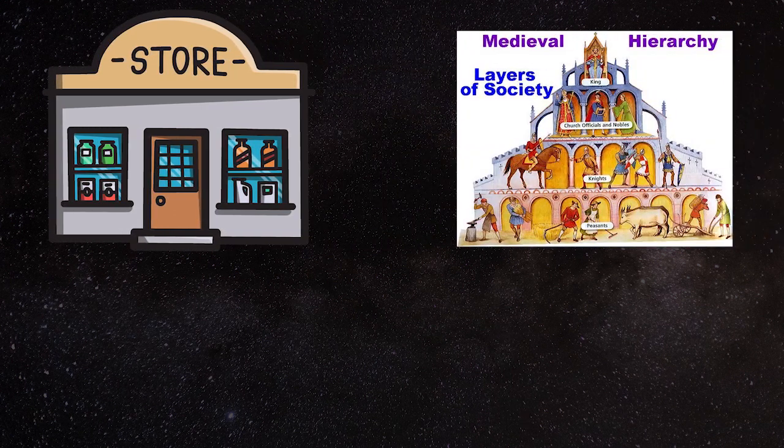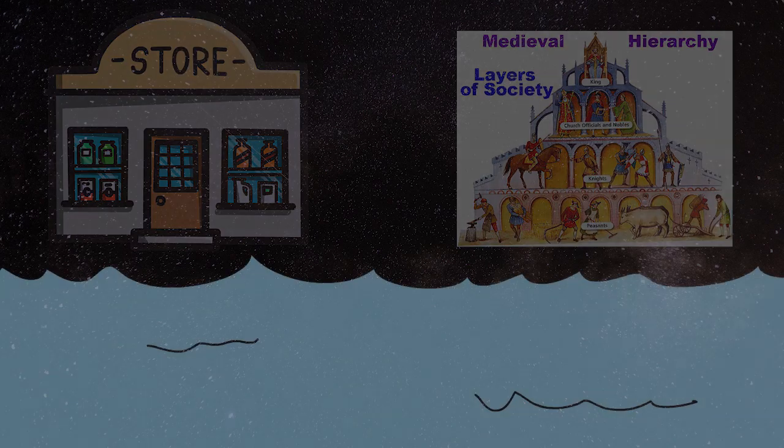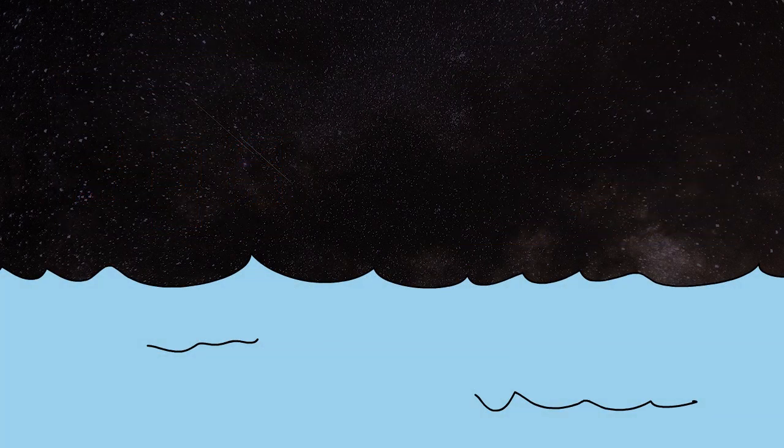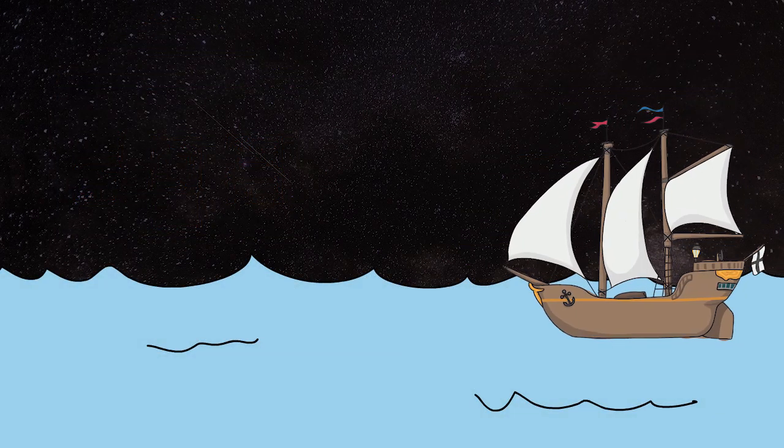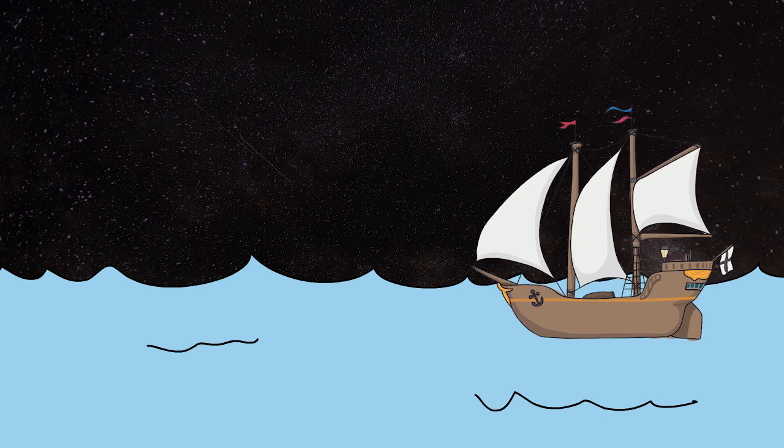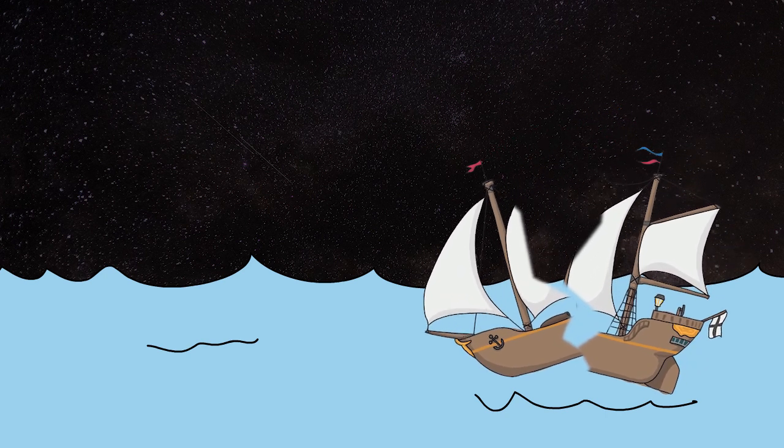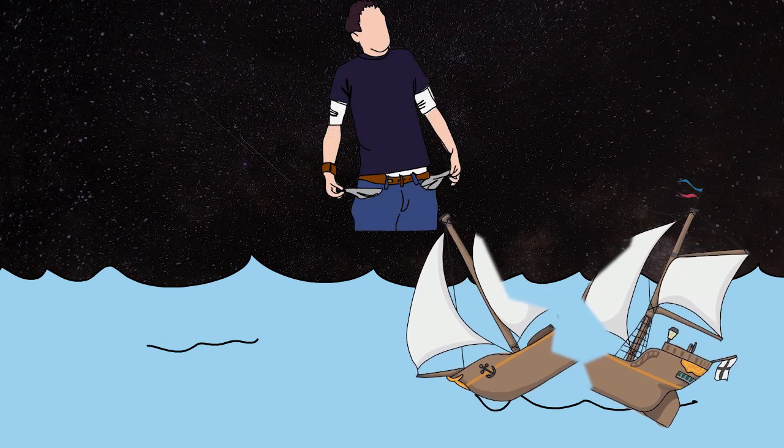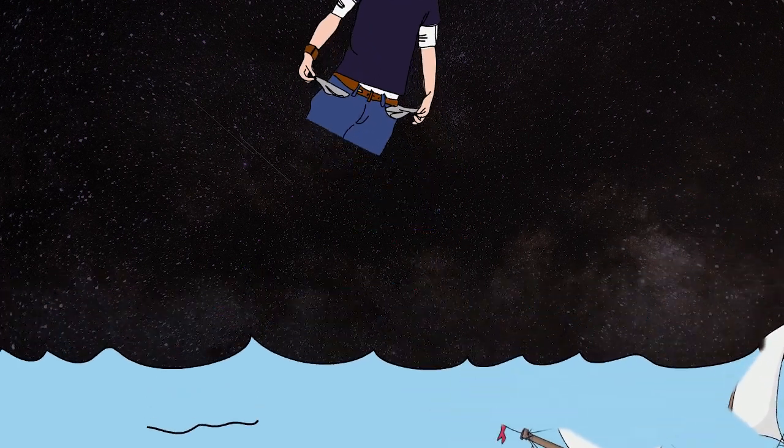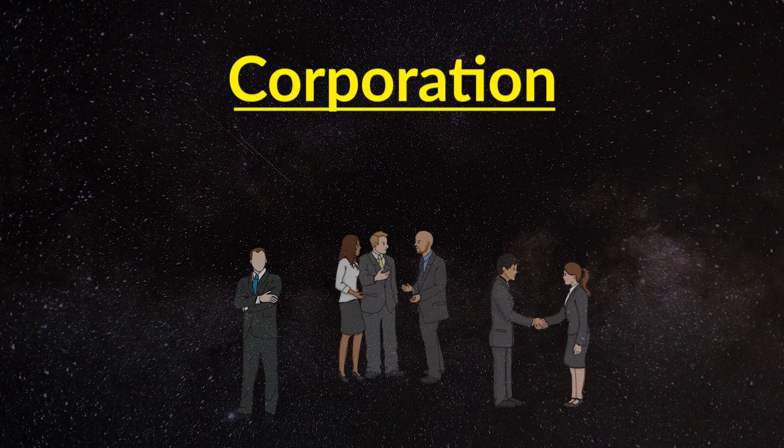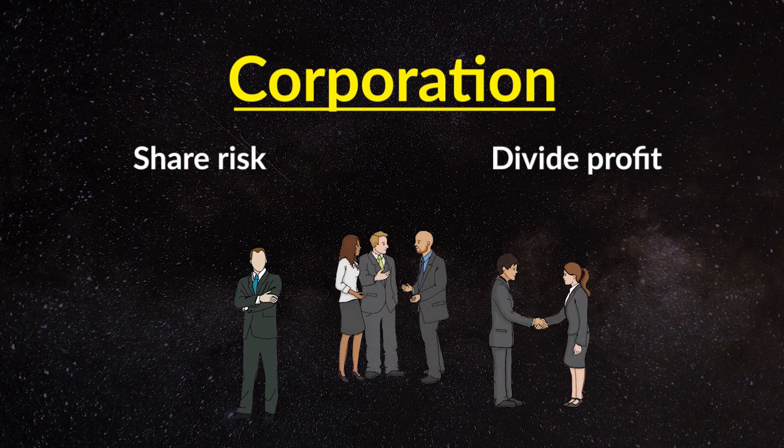As the feudal system is on the decline, and people are beginning to sell their labor and travel long distances to go where their commodity is scarce, they are shipping their commodities across great distances. But the problem with ships is that they can sink. If a ship sinks, it can wipe out your entire livelihood. The solution to this was to create a corporation, a body of people who will share risk and divide profit.